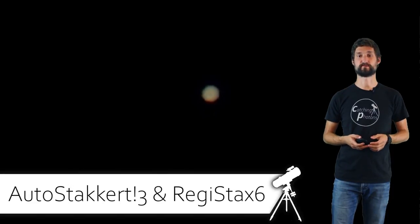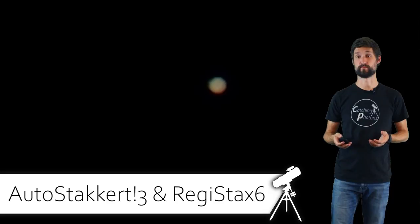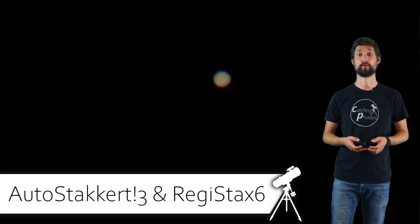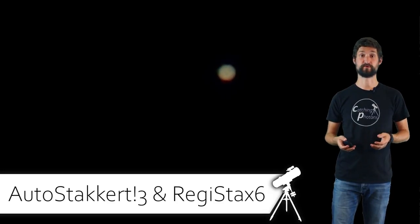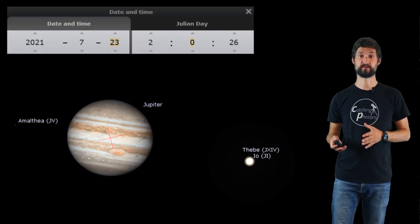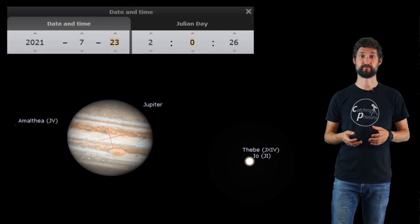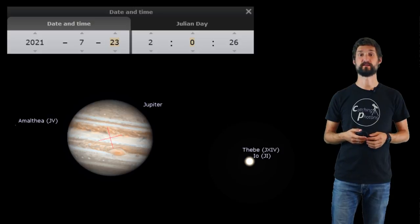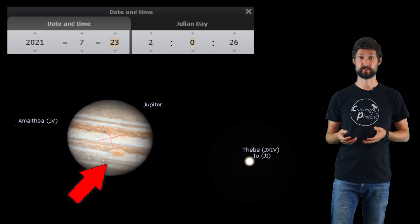Let's run this video frame through AutoStakkert and sharpen it with RegiStax. These are both free-to-use software tools, and this is the result. It is a bit over-processed, but we can image the surface of Jupiter with our binoculars and smartphone only. Compared to this, this is a simulation of Jupiter's surface at this time and date, and clearly you can see the red spot is right where we imaged it.